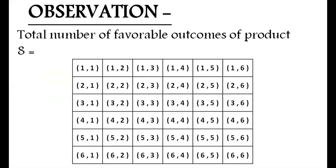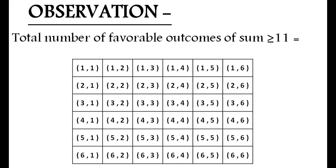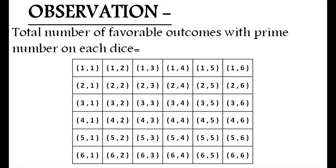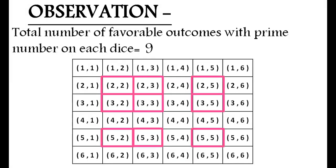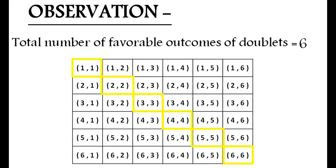Total number of favorable outcomes of product 8 are 2, which are (4,2) and (2,4). Total number of favorable outcomes of sum greater than or equal to 11 are 3. Total number of favorable outcomes with prime numbers on each die is equal to 9 — observe the pink boxes, on both dice the numbers are prime. The total number of favorable outcomes of doublets is 6, meaning the numbers on both dice are equal.